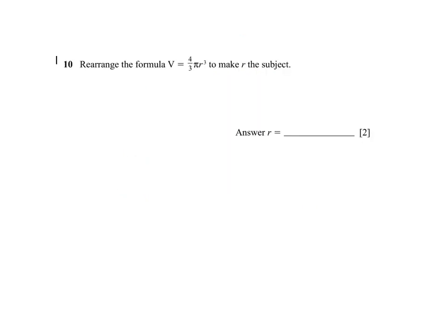I've got to rearrange the formula V equals 4 thirds pi r cubed to make the subject r. So the first thing I'm going to do is multiply both sides by 3. And what happens on the right is the 3 and the 3 cancel, and that leaves me with 3V equals 4 pi r cubed.